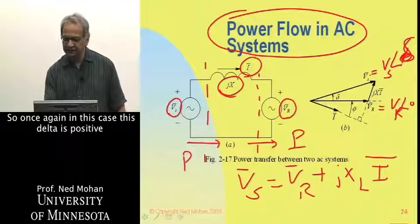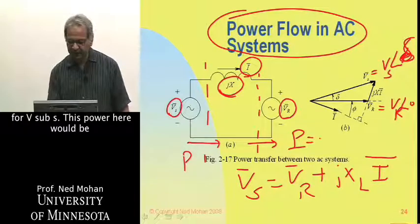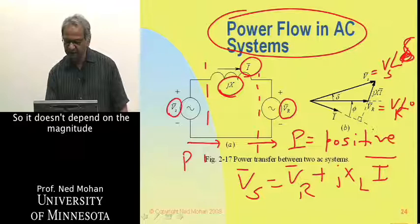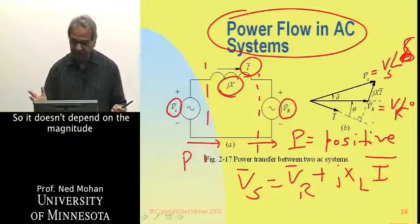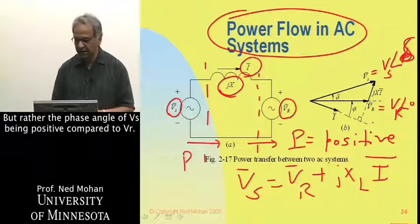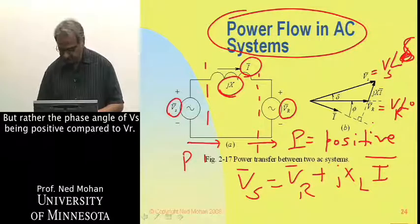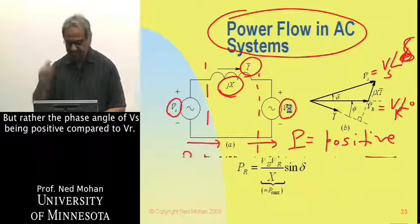If delta is positive for Vs, the power flow would be positive in the direction shown. So it doesn't depend upon the magnitude of Vs in relation to Vr, but rather on the phase angle of Vs being positive compared to Vr.